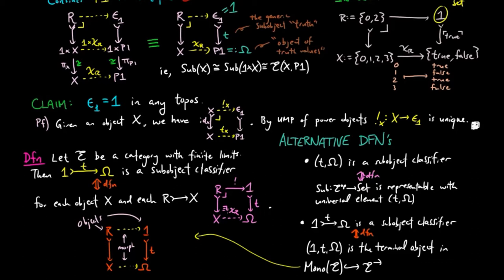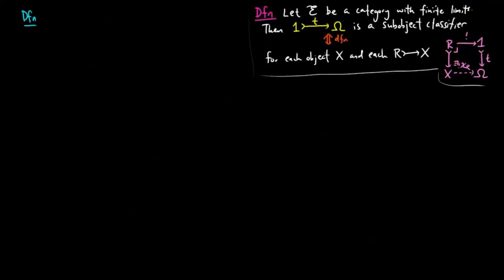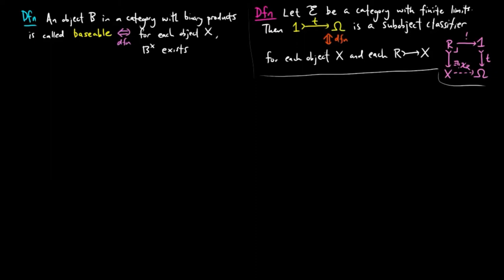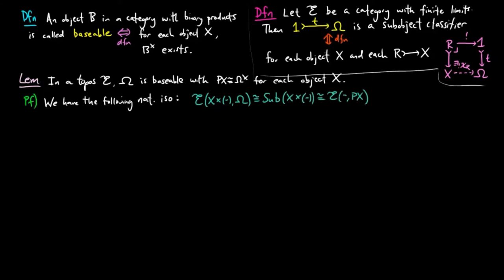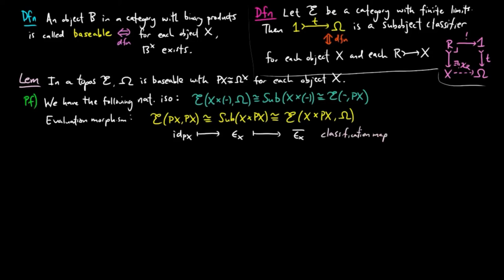It is possible to define a topos by the existence of a sub-object classifier, provided the category also has enough exponentials of a certain type. An object B in a category with binary products is called baseable provided for each object X, the exponent B to the X exists. We have that in a topos E, the sub-object classifier Ω is baseable, with PX isomorphic to Ω to the X for each object X. For the proof, we have the following natural isomorphisms, where the first isomorphism comes from Ω being the sub-object classifier and the second by the definition of power objects. Thus, the evaluation morphism is the universal element, which is the characteristic map for the membership relation.